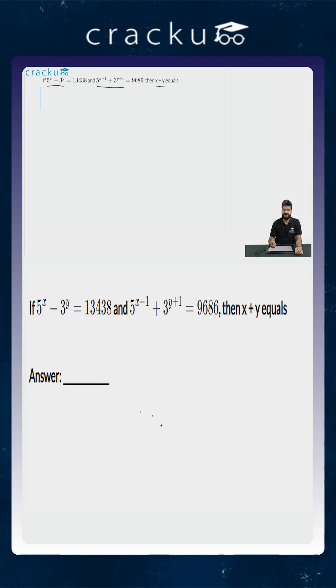So to solve this, we will first find out the value of 5 to the power x and 3 to the power y, then calculate the value of x and y from it, and then calculate what is the value of x plus y. So if you look at both of the equations that are given to us, they are relating to 5 to the power x and 3 to the power y.